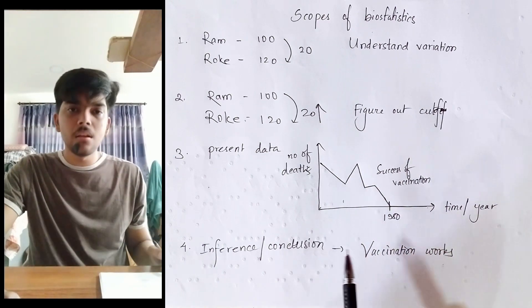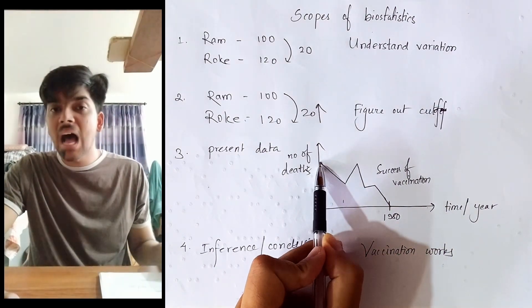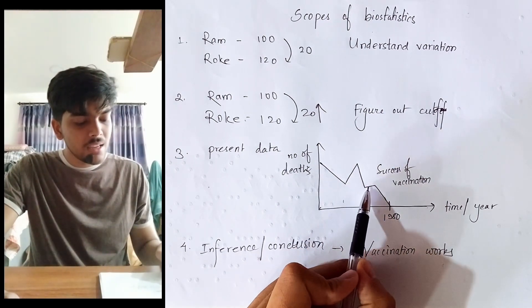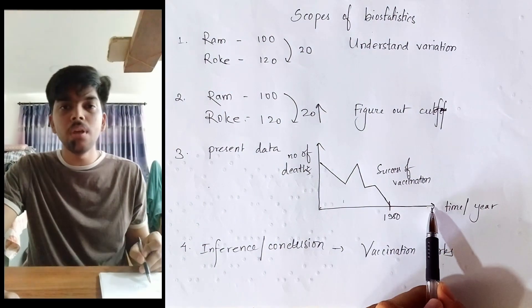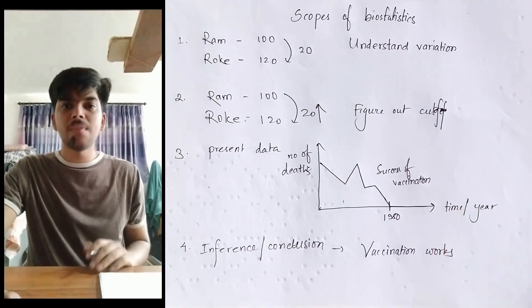As you can see, before 1980, the deaths due to smallpox was very high. But as time passes, it decreases - it keeps on decreasing, and after 1980, there is no case of smallpox at all. This shows the success of vaccination.